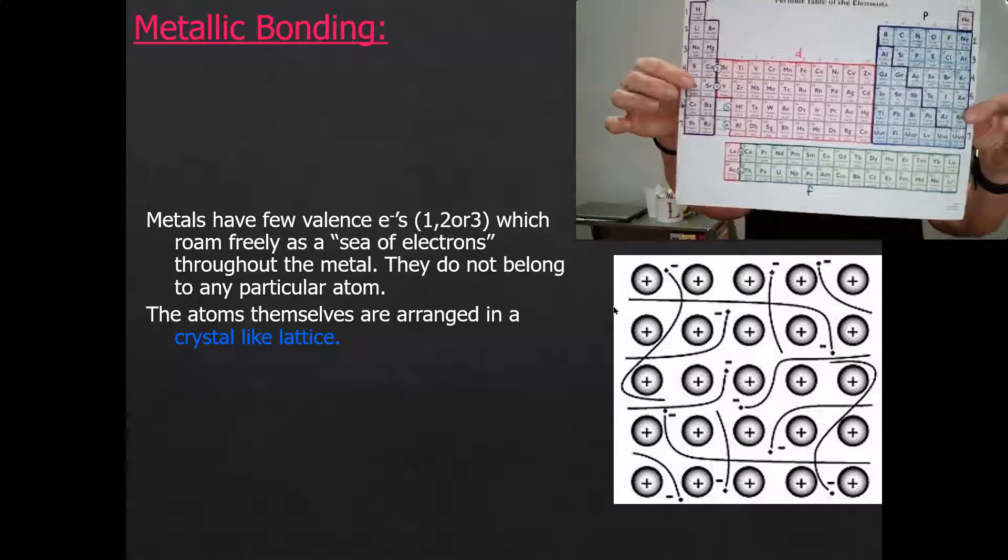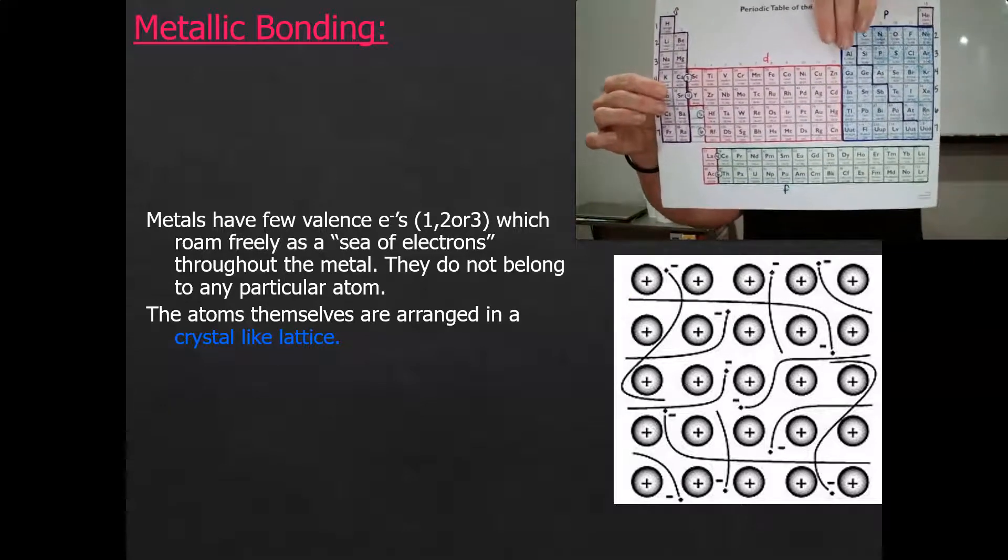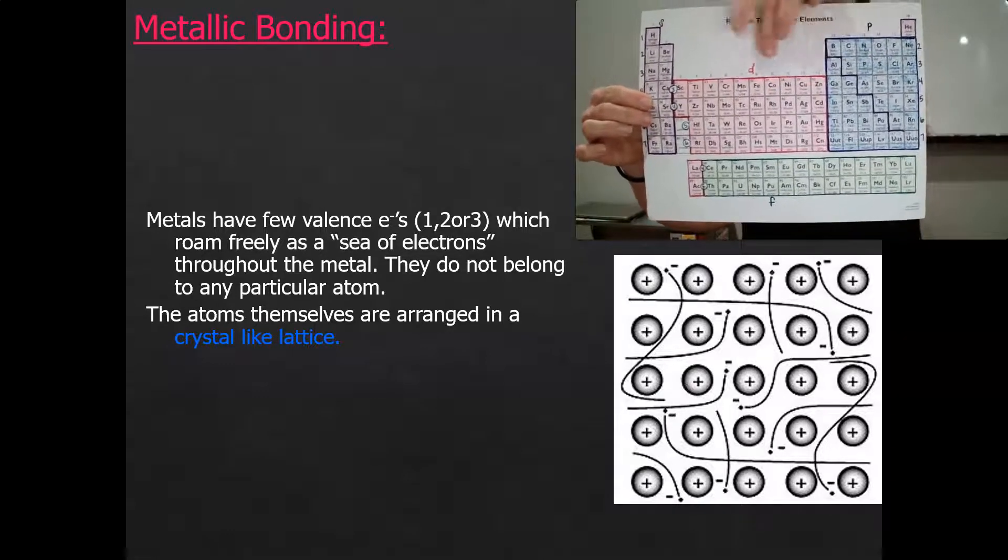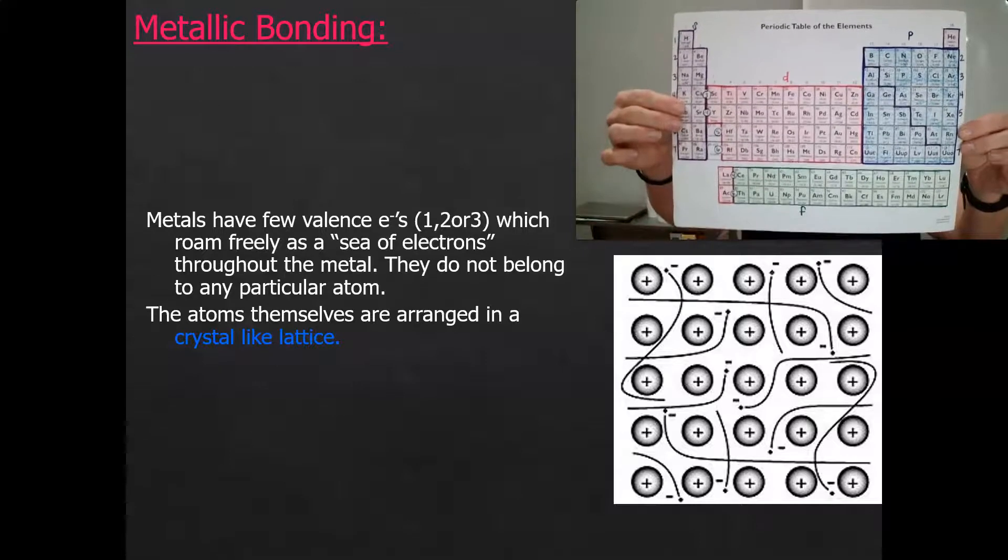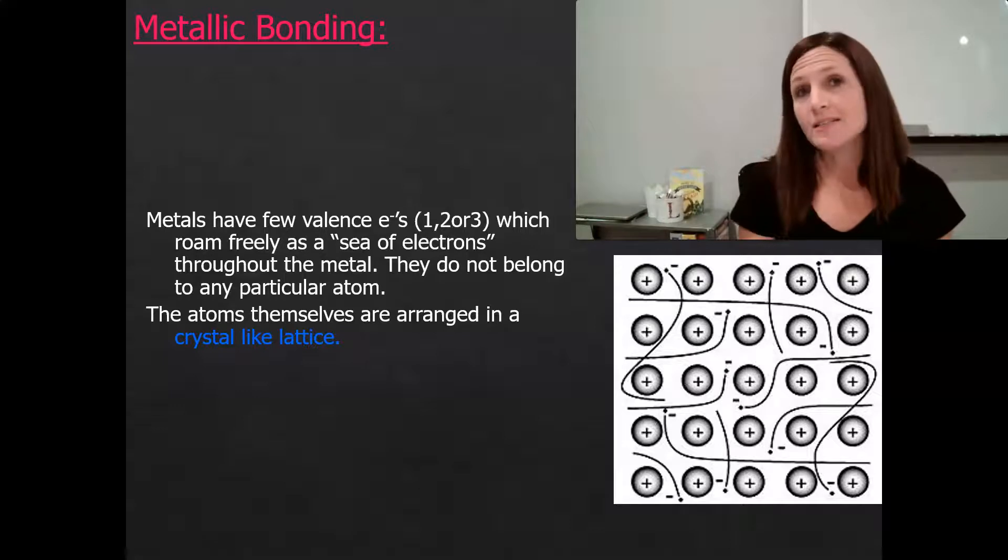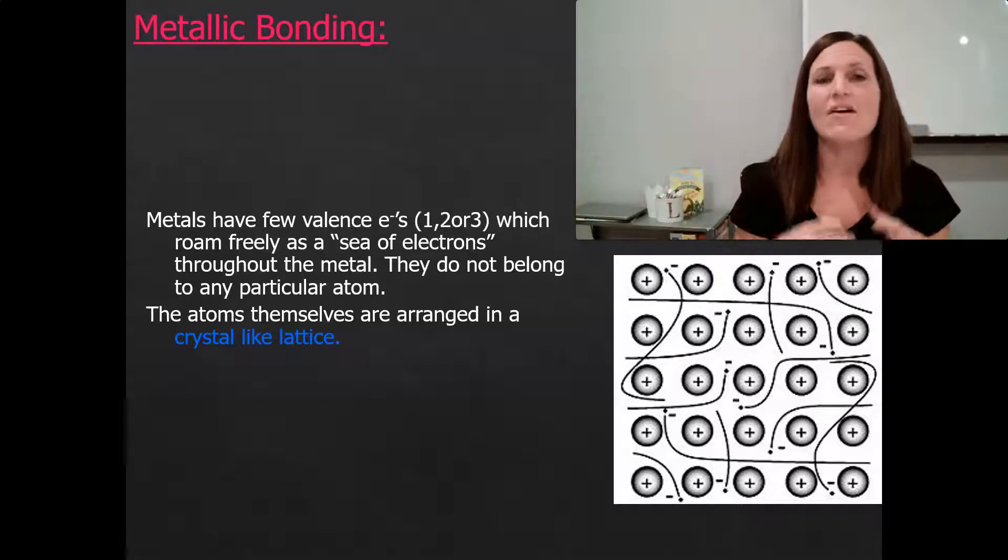When we look at the periodic table in the d-block, these are the metals we're really talking about - these d-block and p-block metals. They have very few valence electrons: one, two, or three. Because of that, they're not really going to get to that octet of 8 very easily.